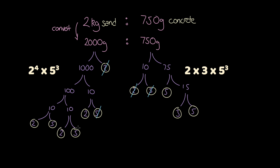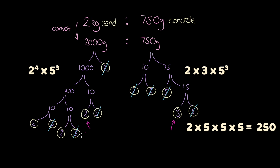Taking out factors that occur in both gives us the highest common factor of 250. This means that what we have left is the lowest factor in each part of the ratio that isn't common with the other — so the simplest form of our ratio. And that's it! Thanks for watching, and I hope this has helped get your head around some ratios more easily.